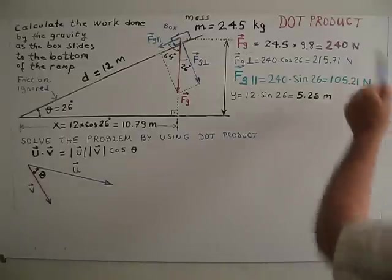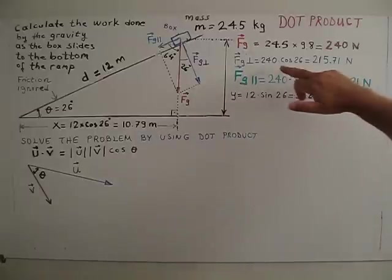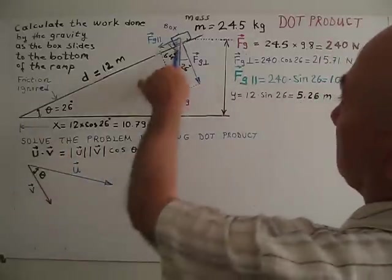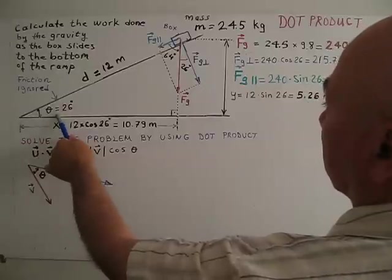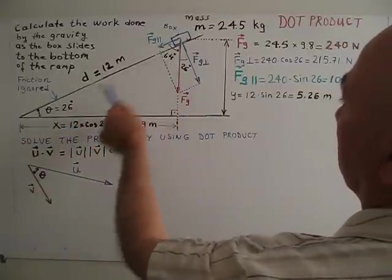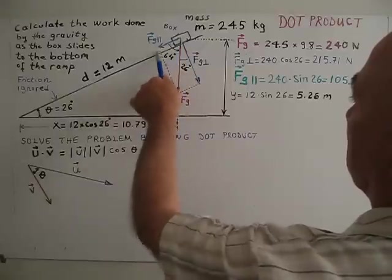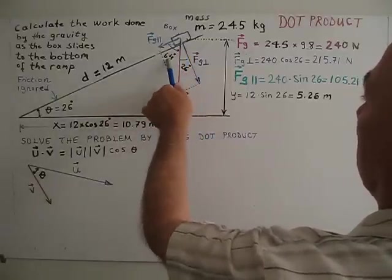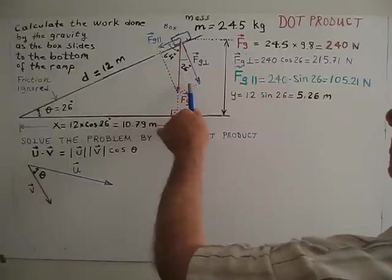After I calculate FG perpendicular, basically, this is right triangle again. This is 26 degree given slope. So, this is 90 minus 26, this is rectangular. This is 90 degree, 90 minus 64, 26 degree.